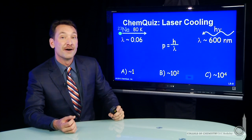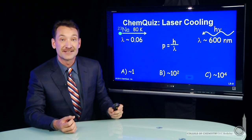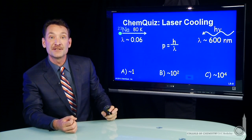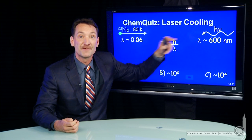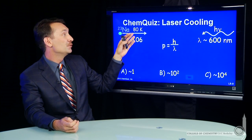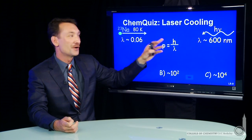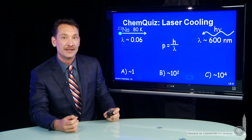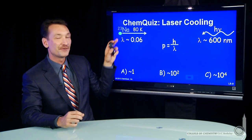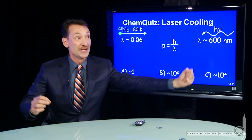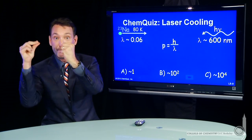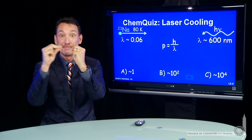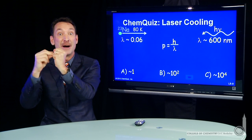Those photons of yellow light coming in at 600 nanometers — we want the momenta of these two systems to be equal. We want to transfer enough momenta from these waves to stop the particle. The wave has a particle nature; it has a tiny little momentum. We need to transfer it to this larger momentum, so we keep hitting the sodium atom with photons until it about stops.